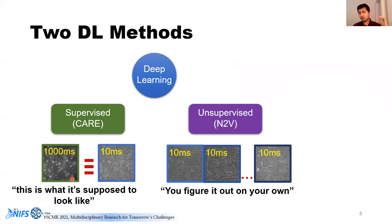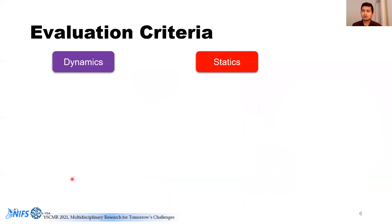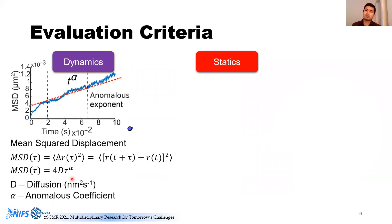We need to have a very strong evaluation criteria. I separate it as dynamics and statics. When we talk about the dynamics of this, we have to make sure that whatever was restored, those trajectories have the same or similar diffusion and anomalous coefficients. Diffusion and anomalous coefficients are extracted from the mean square displacement. Mean square displacement basically means how far the particle has traveled from its previous position. You can kind of call diffusion as speed, but it's a similar meaning.